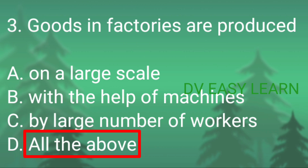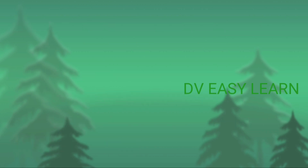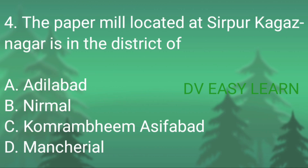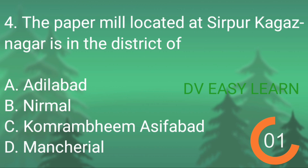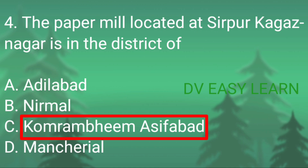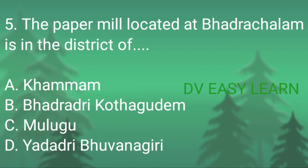Third question: goods in factories are produced — correct answer: all the above — on large scale, with the help of machines, by large number of workers. Question number 4: the paper mill located at Sirpur Kagasnagar is in the district of — correct answer: Komaram Bhim Asifabad. Fifth question: the paper mill located at Bhadrachalam is in the district of —